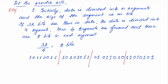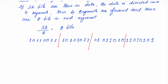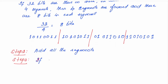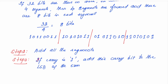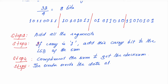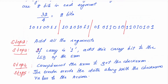Whatever we did just now is step 1. Then what is step 2? Step 2 is to add all these segments. If there is a carry, if the carry bit is 1, then you need to add this carry bit to the LSB of the sum. Whenever you get a carry, that carry bit has to get added to the LSB of the sum. Now what is step 4? In the previous step you got some value, that is called as the sum. Now complement the sum to get the checksum.